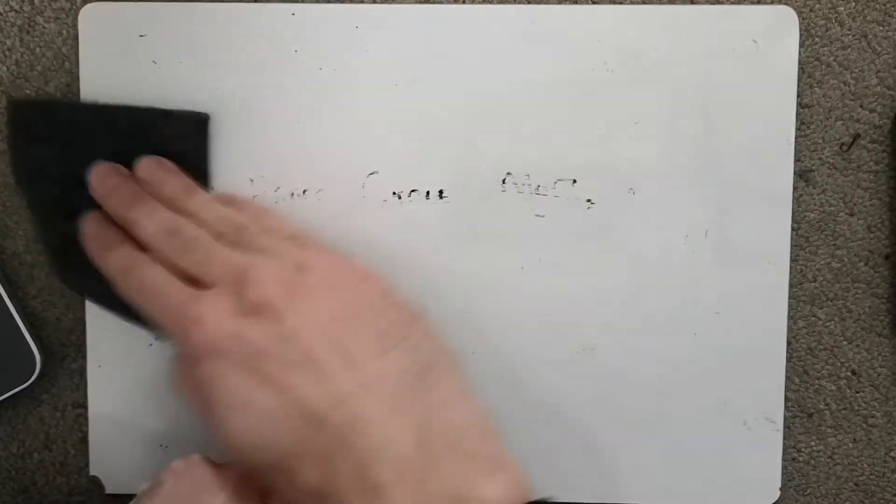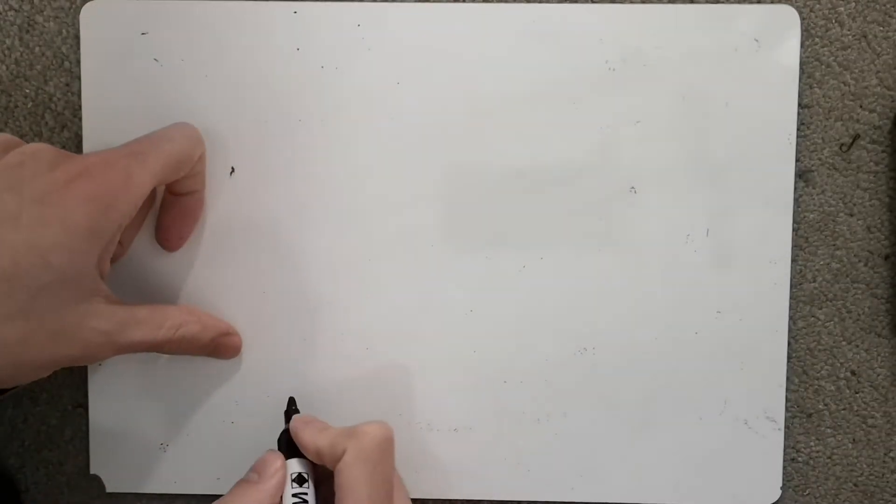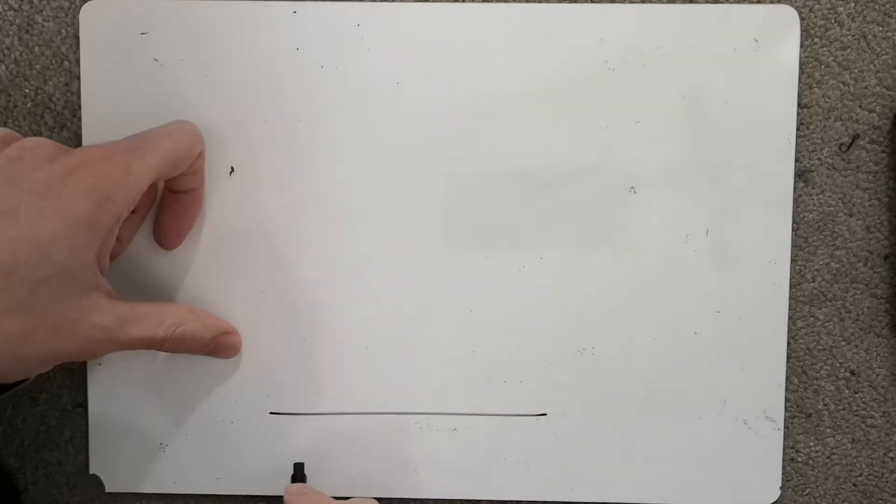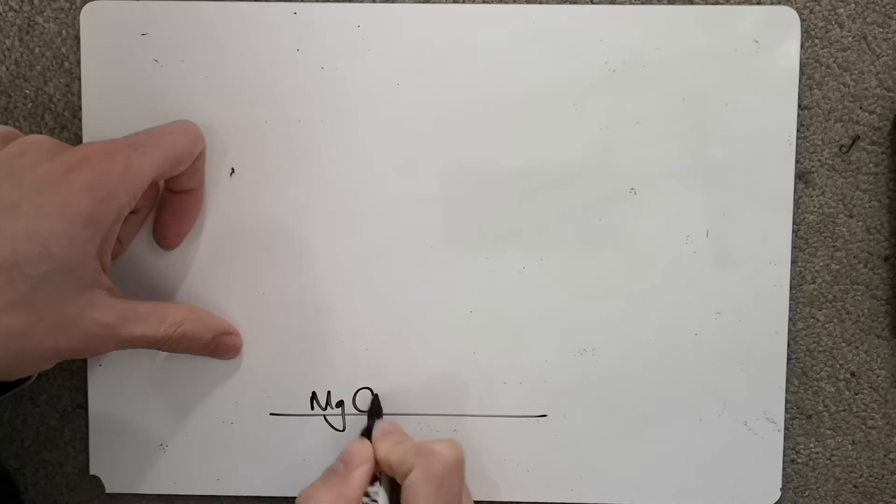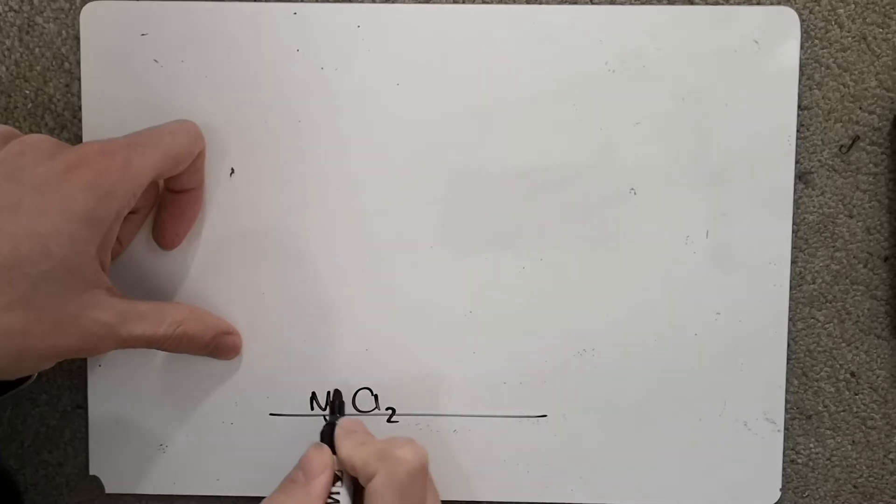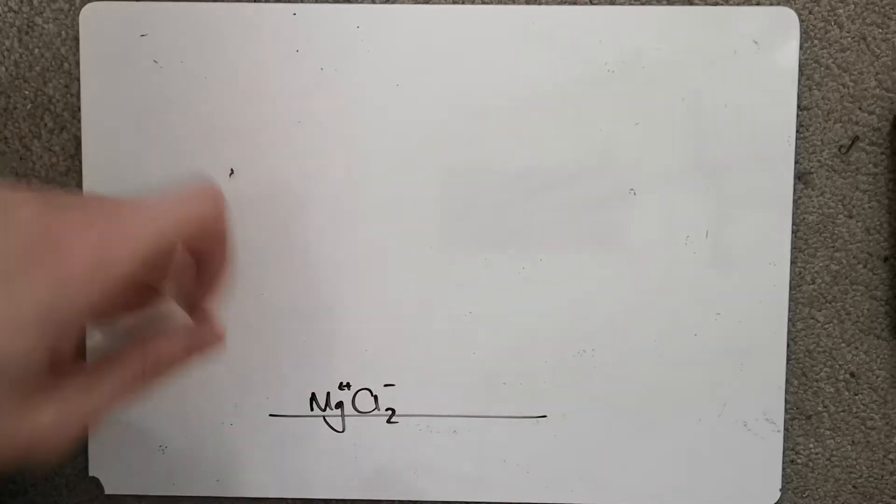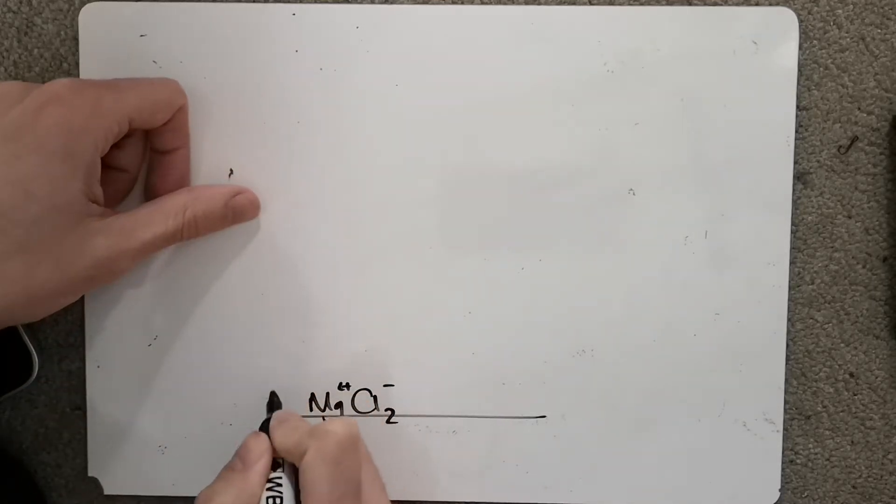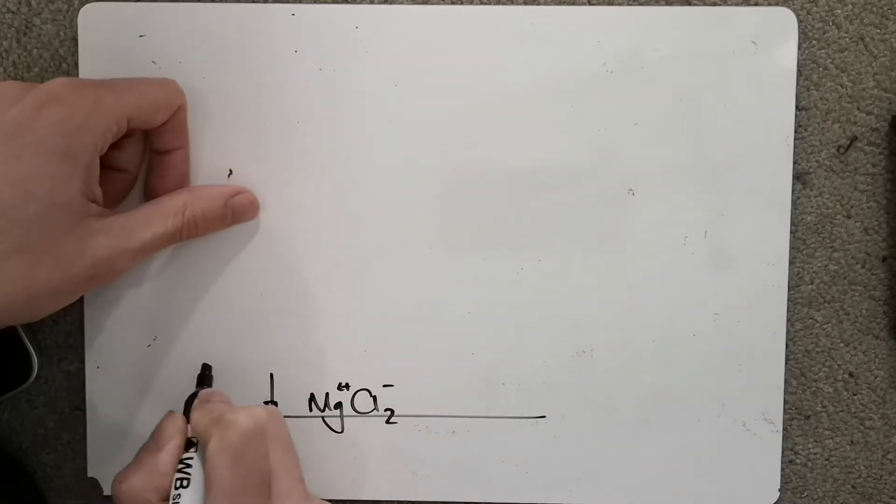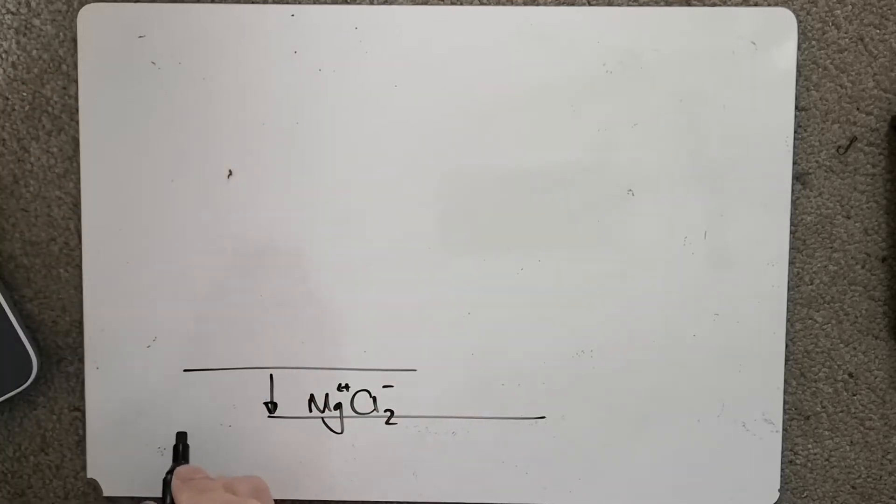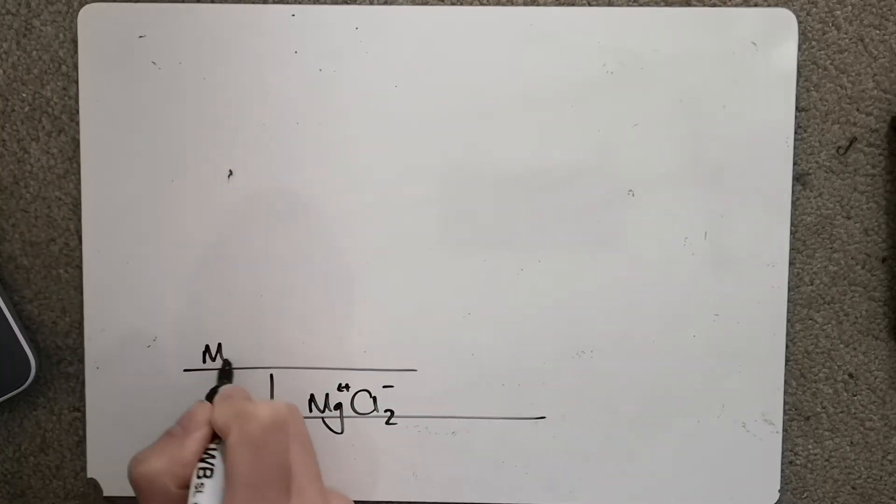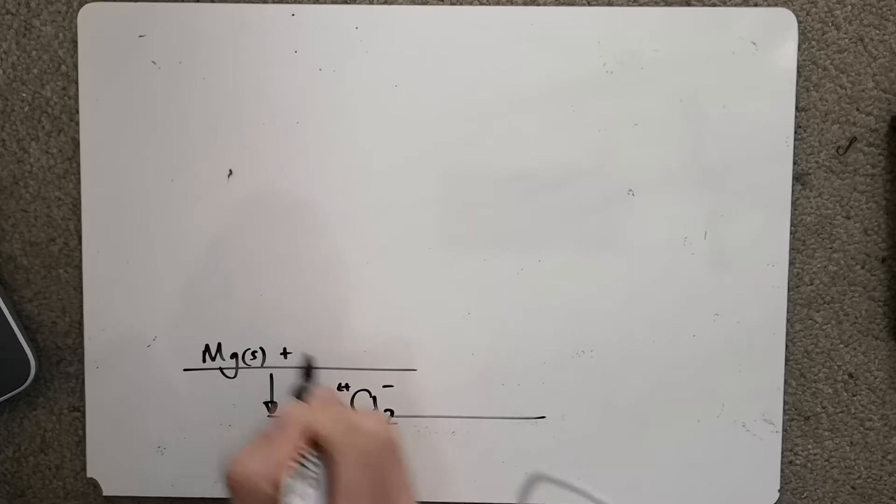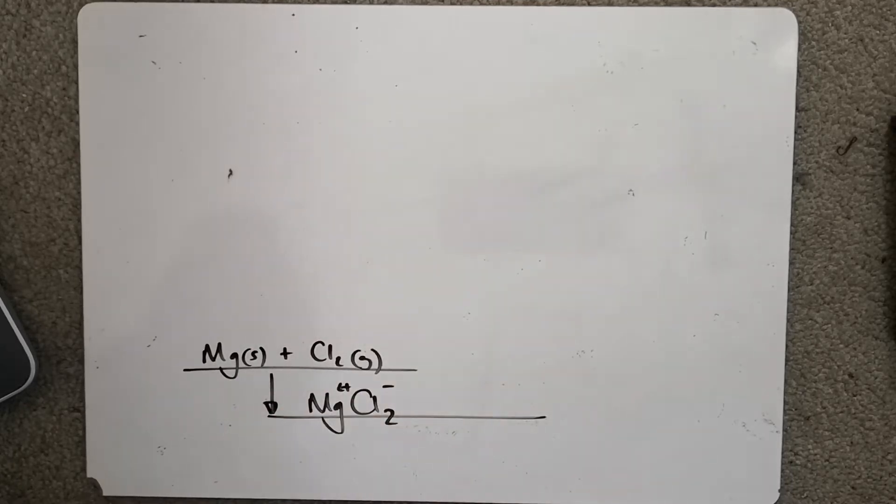So in MgCl2, our ion down here at the bottom is MgCl2 with Mg 2+ and each of the Cls is negative. From our enthalpy of formation we're going to have magnesium solid plus Cl2 gaseous.